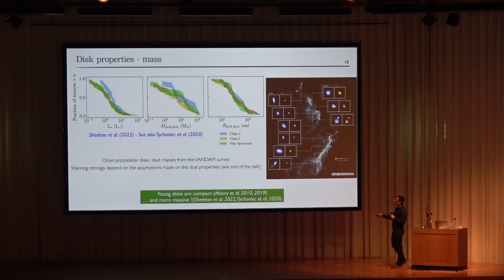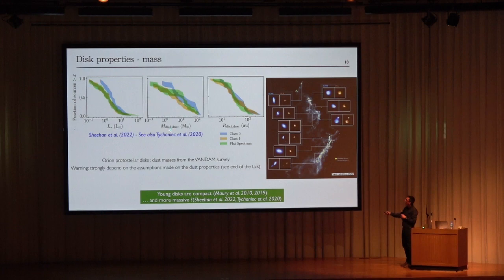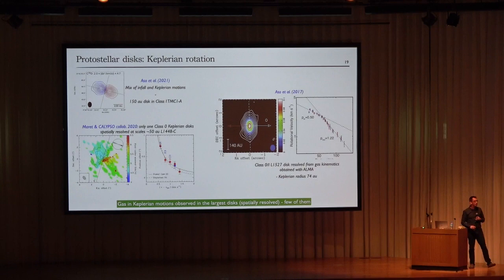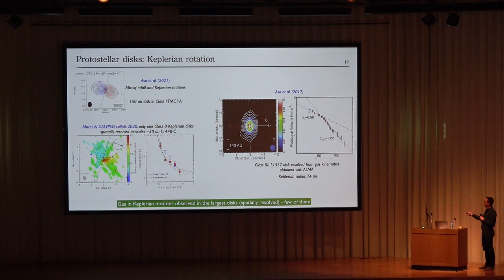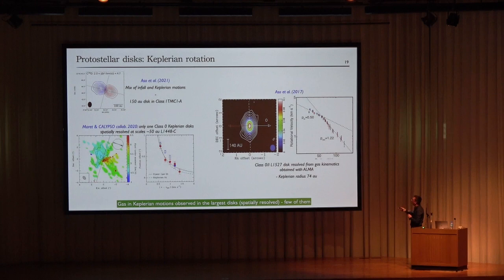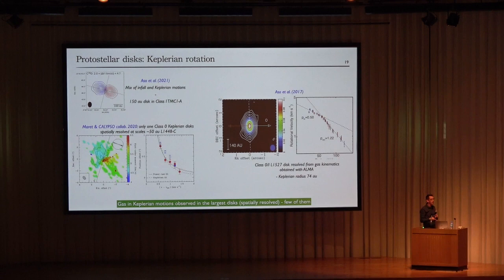One can also get the disk mass, assuming optically thin dust emission, though this suffers from large uncertainty at high densities. There seems to be a slight trend of decreasing mass with age, so young disks appear more massive. Another way to test disk size is through kinematics in collapsing clouds. Examples showing Keplerian motion have been observed — for instance, in work by Azo et al., the rotation velocity as a function of radius shows a 0.5 slope at low radius indicating Keplerian rotation, and a steeper slope indicating a collapsing envelope, giving a disk radius of about 70 AU, consistent with compact size.